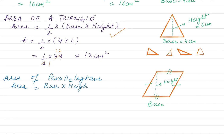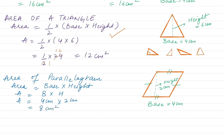The height is drawn perpendicular to the base. Suppose the base is 4 centimeters and the height is 2 centimeters. The area of the parallelogram is equal to base times height, which is 4 times 2. This equals 8, so 8 centimeters squared is the area of the parallelogram.